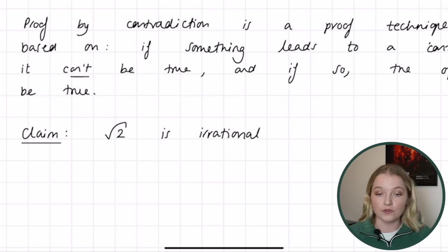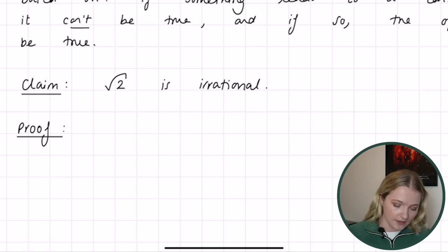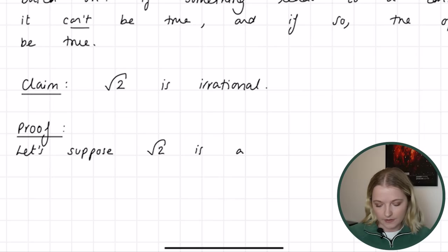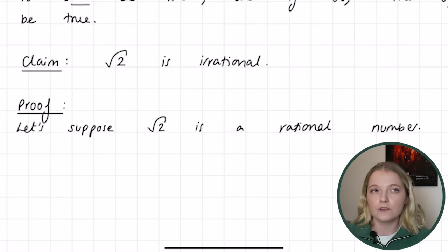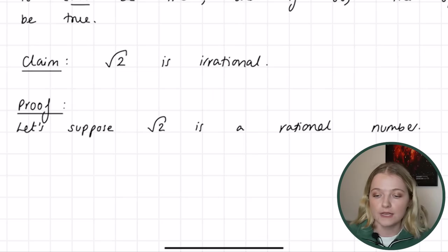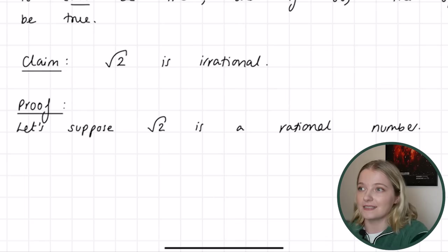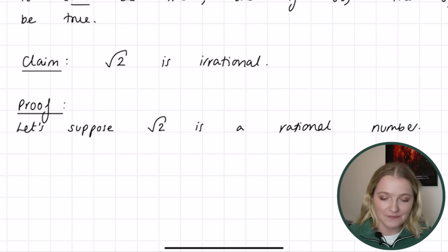Root 2 is an irrational number. For the proof, we're going to suppose that actually root 2 is not irrational — it's rational. So we say: suppose that the square root of 2 is a rational number. This is the setup for the contradiction. We start by assuming root 2 is rational, and then we'll arrive at some contradiction later on, which will show that root 2 cannot be rational and must therefore be irrational.